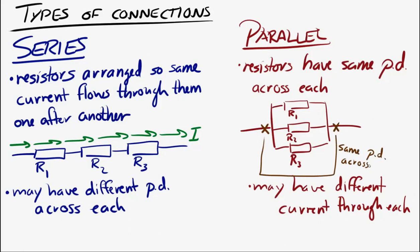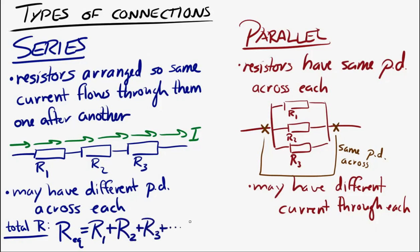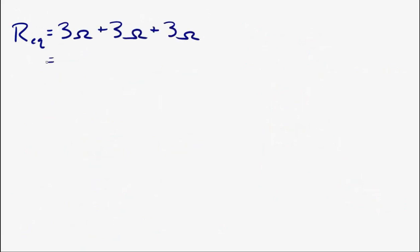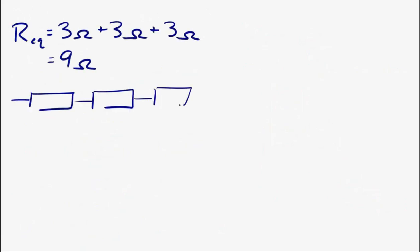We can find the total resistance provided by different combinations of resistors. For a series connection, if you have a bunch of resistors, the total resistance of that arrangement is just the sum of the individual resistances. So if we had three 3-ohm resistors in series, the total resistance is 3 ohms + 3 ohms + 3 ohms = 9 ohms. We call this the equivalent resistance of that combination of resistors.